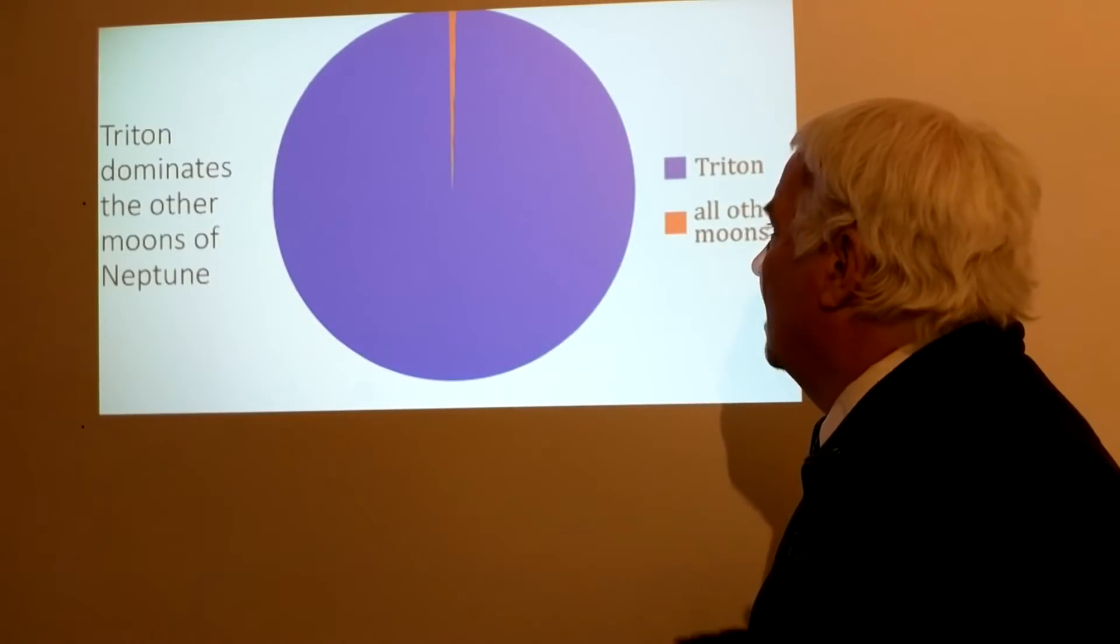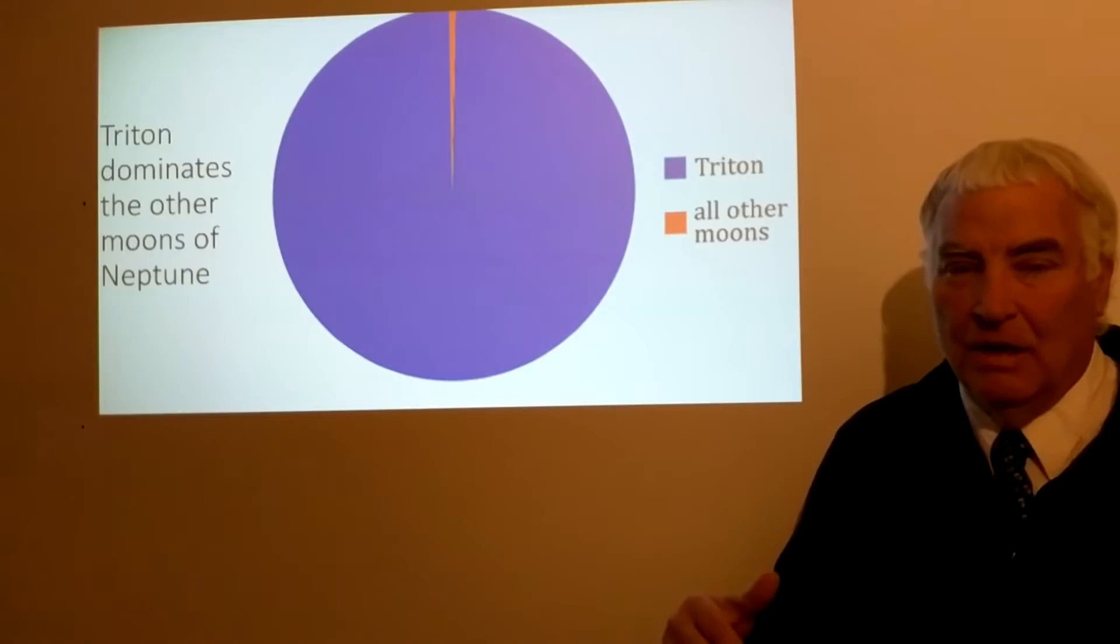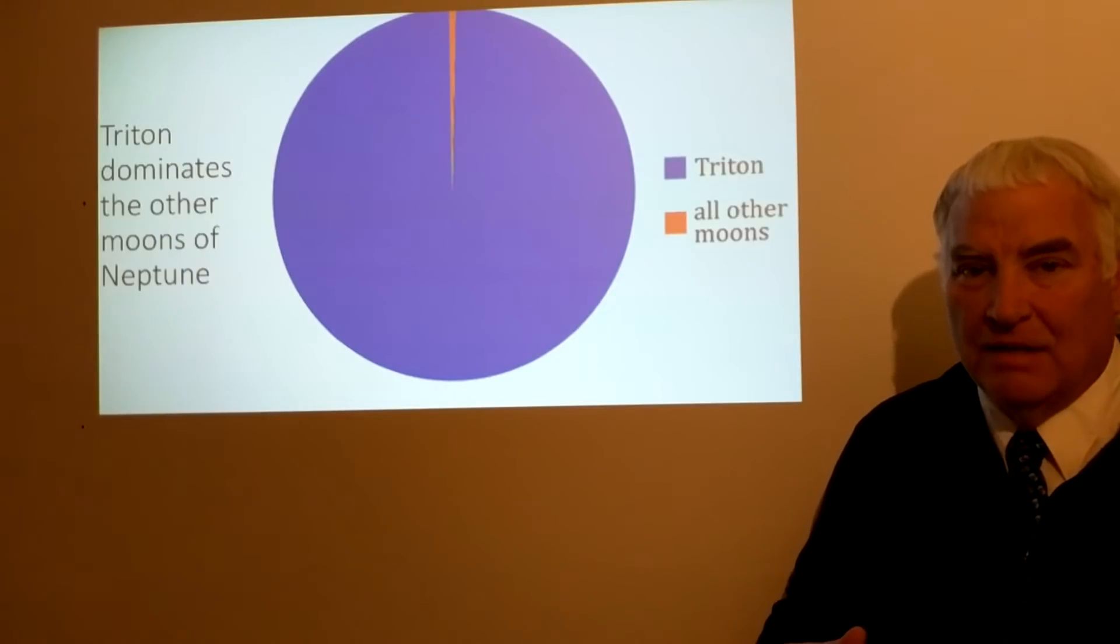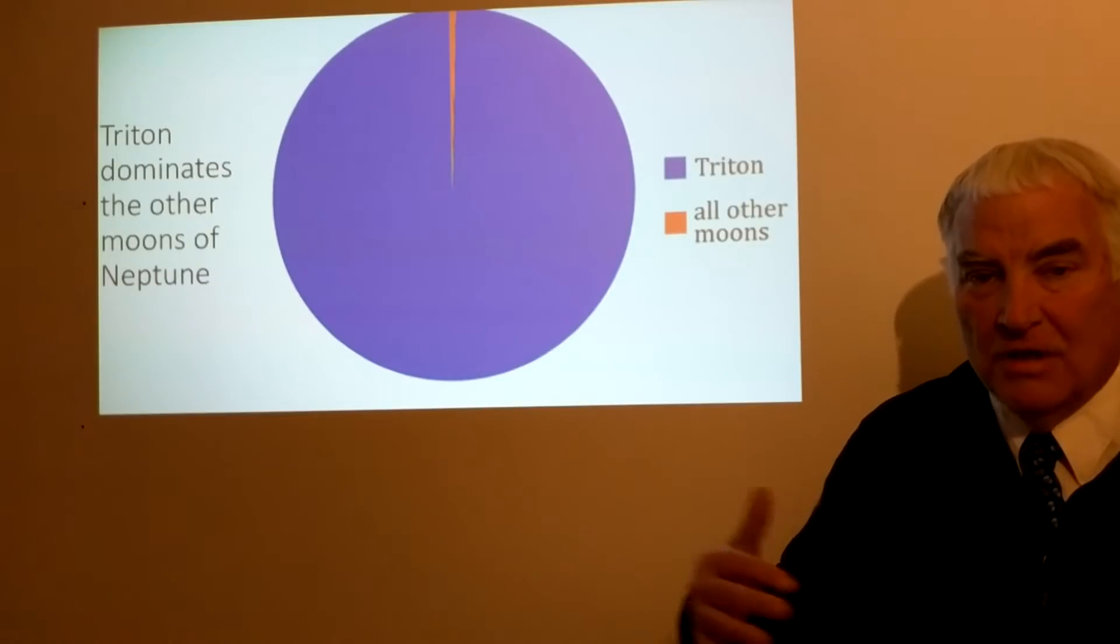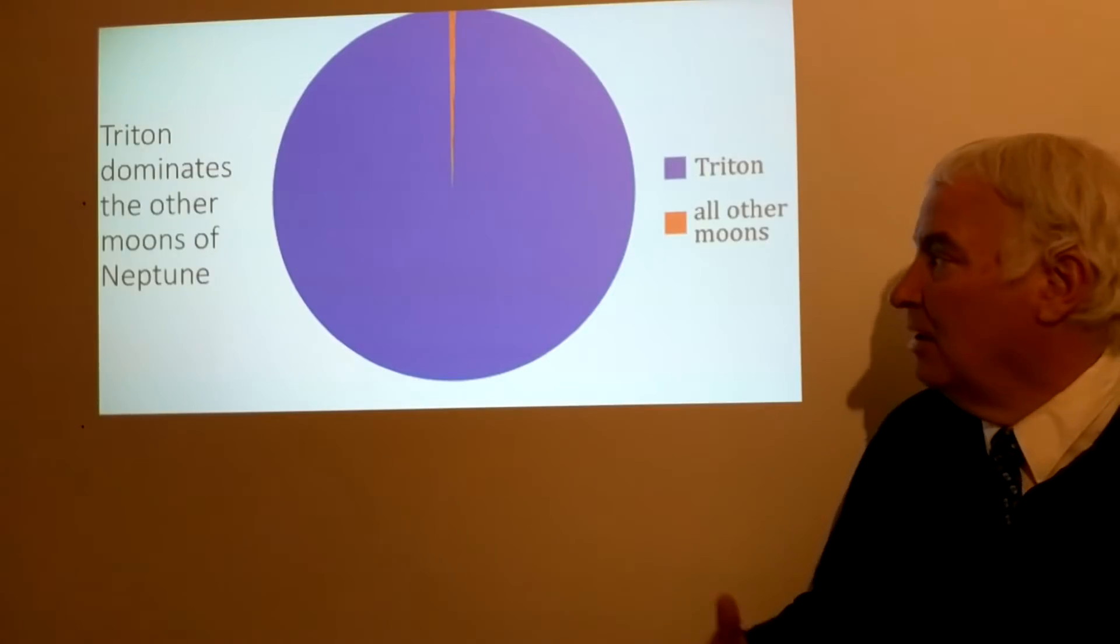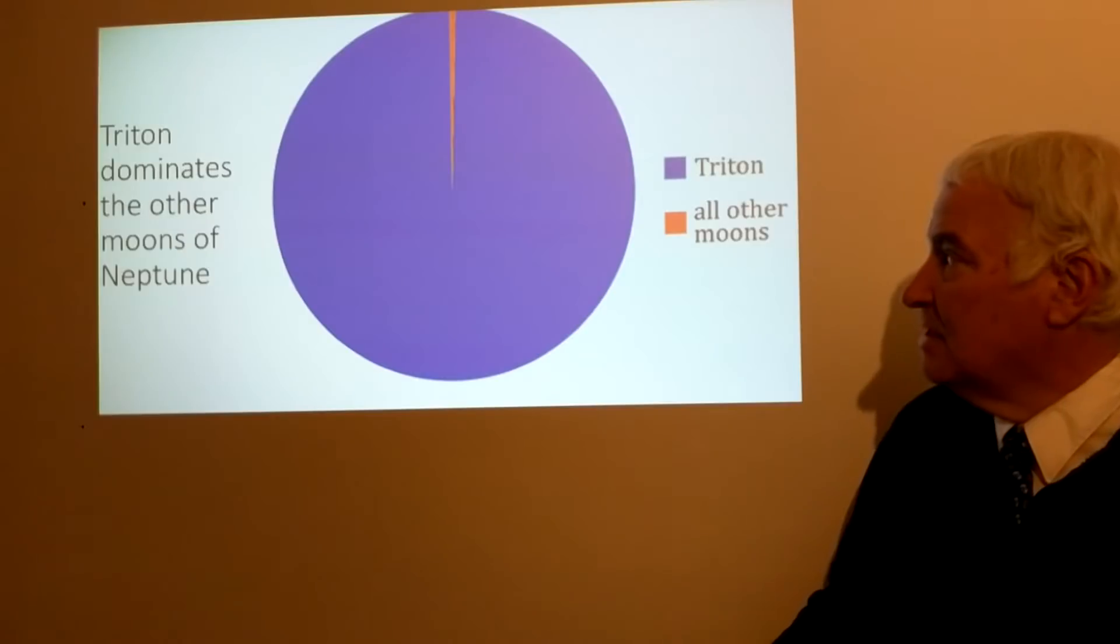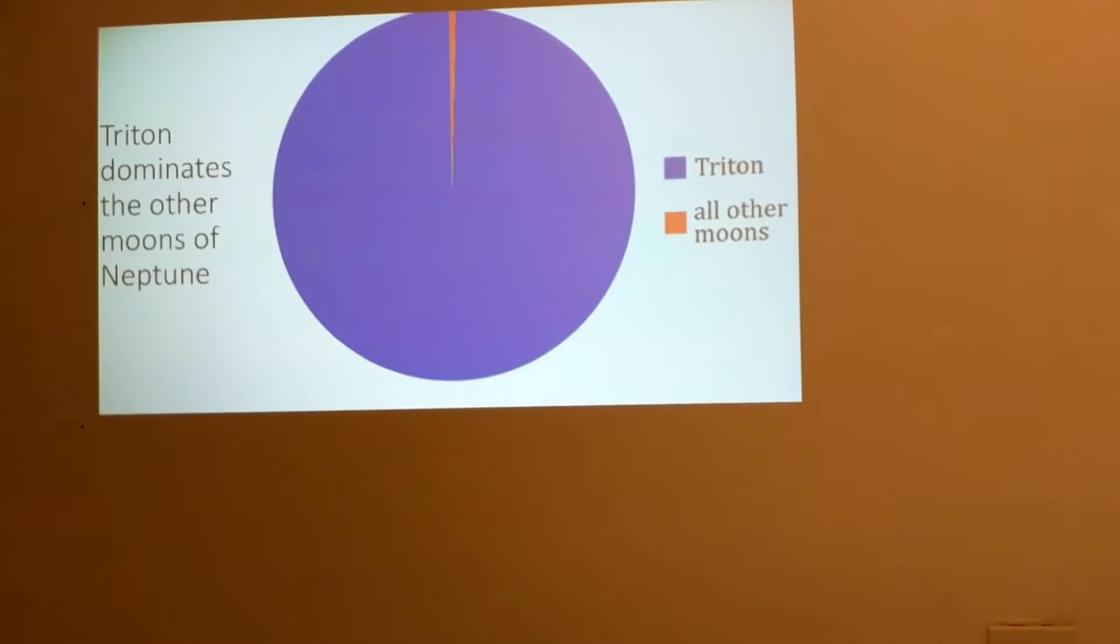This is probably, or could be, the most important associated with the capture of Triton by Neptune. As that happened, it may have caused other moons to have been lost or crashed into each other and otherwise lost from the system. So Triton is dominating the mass of the moons of Neptune, and there's just not that many known moons of Neptune because they're all very small except Triton.